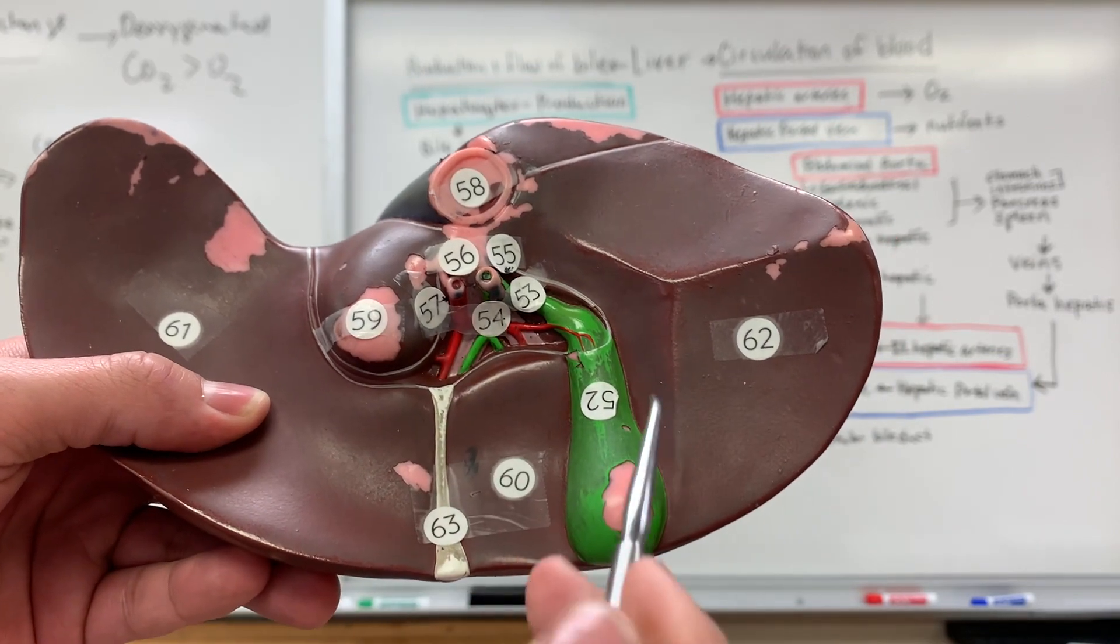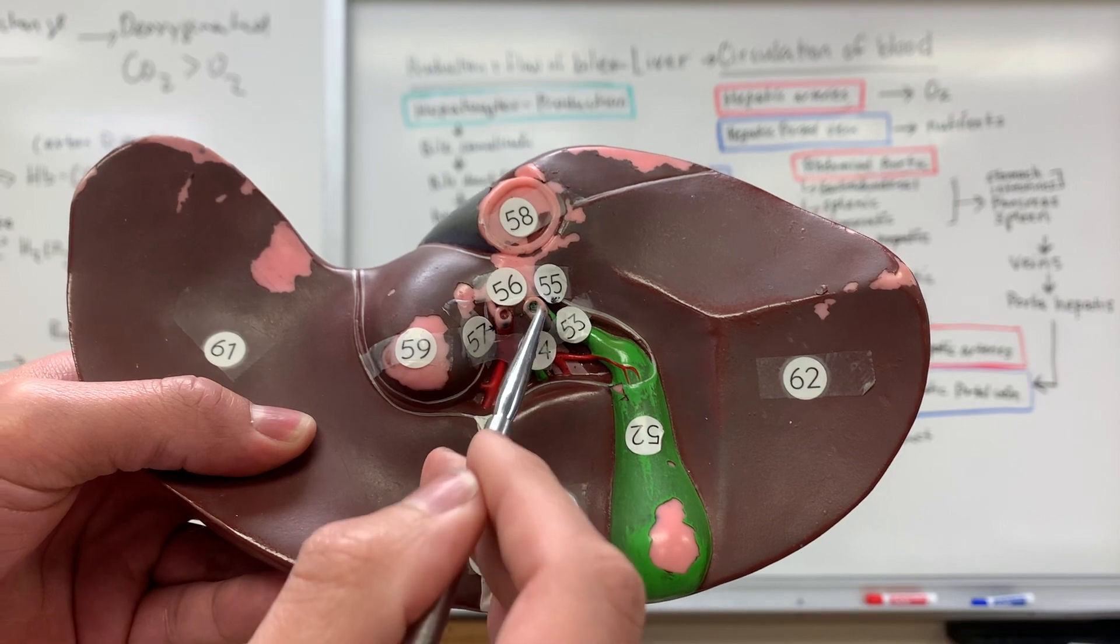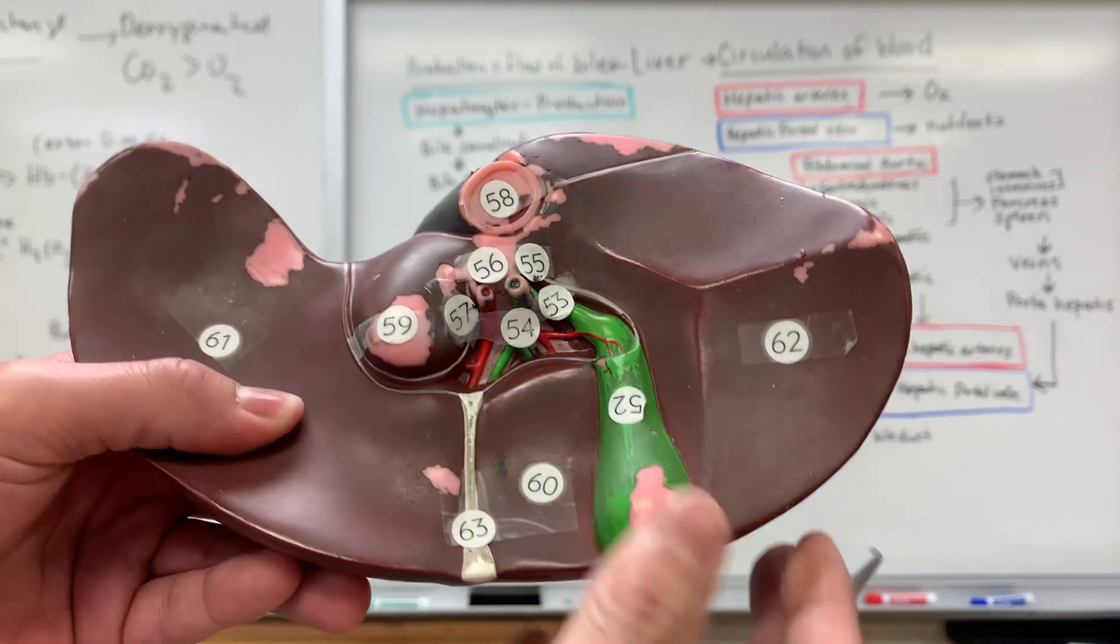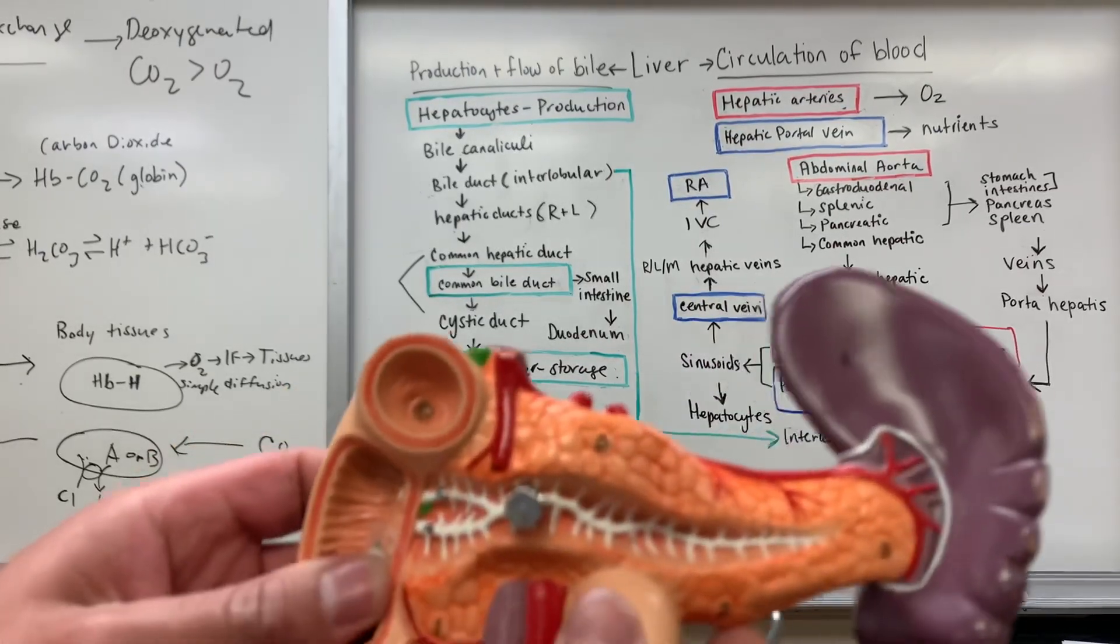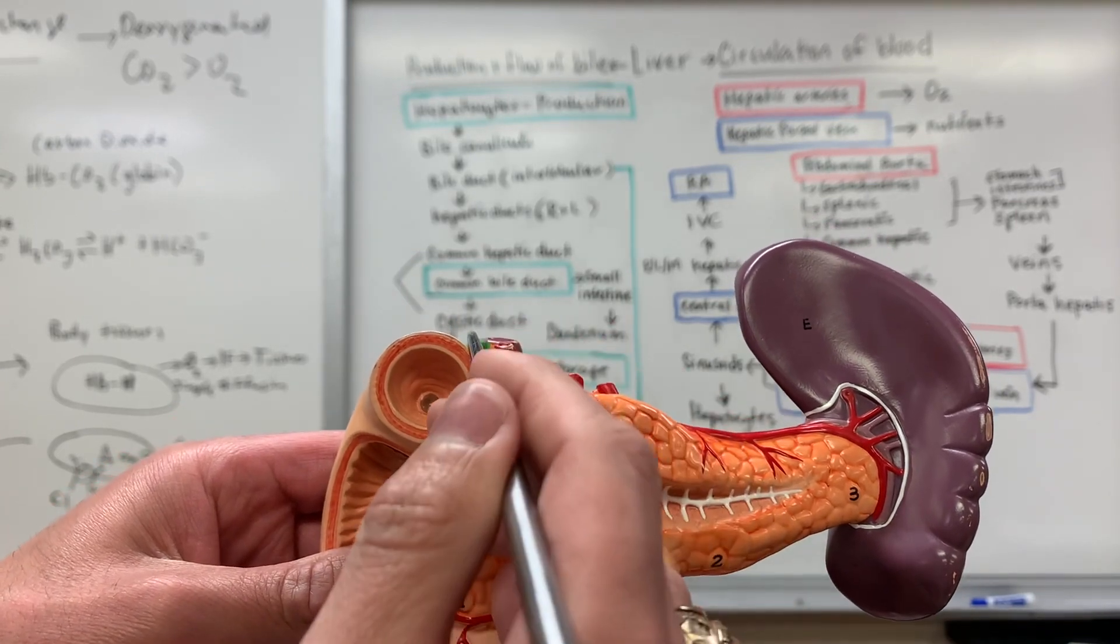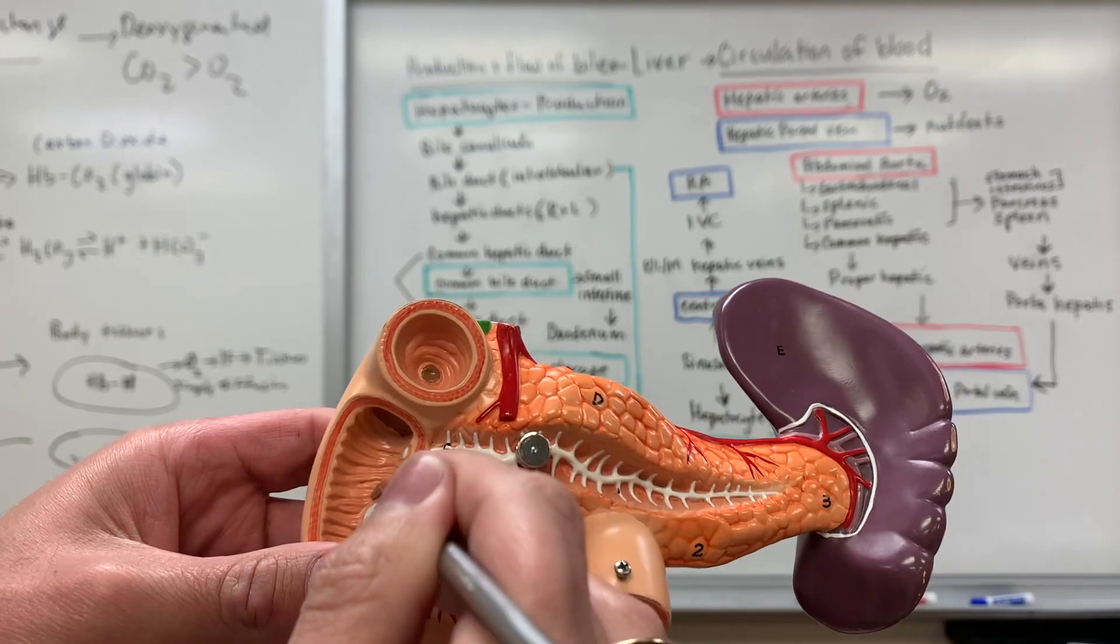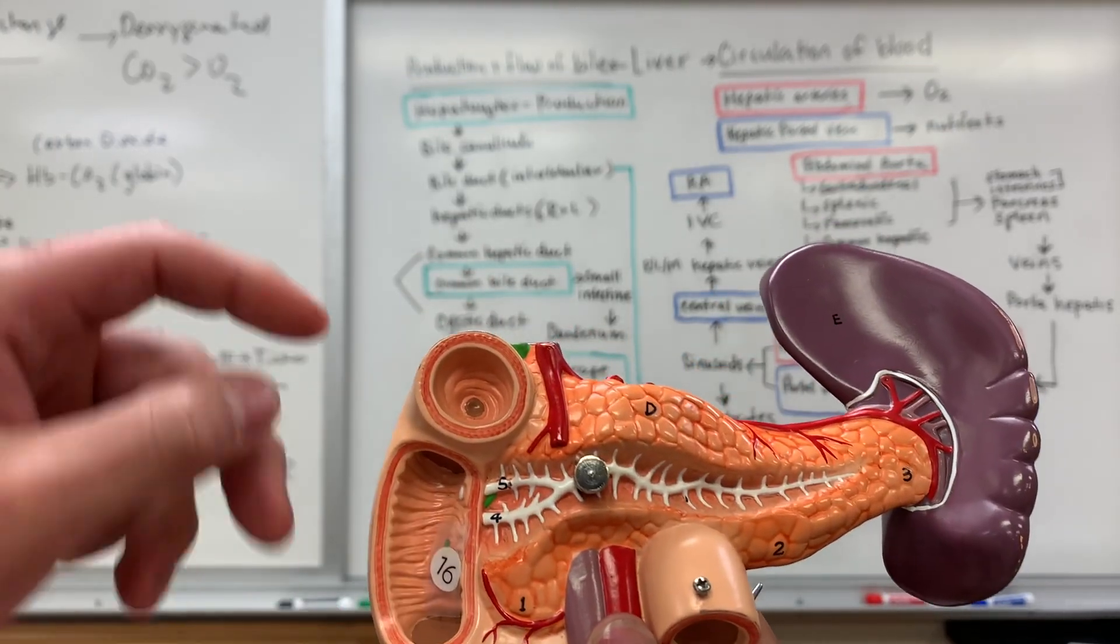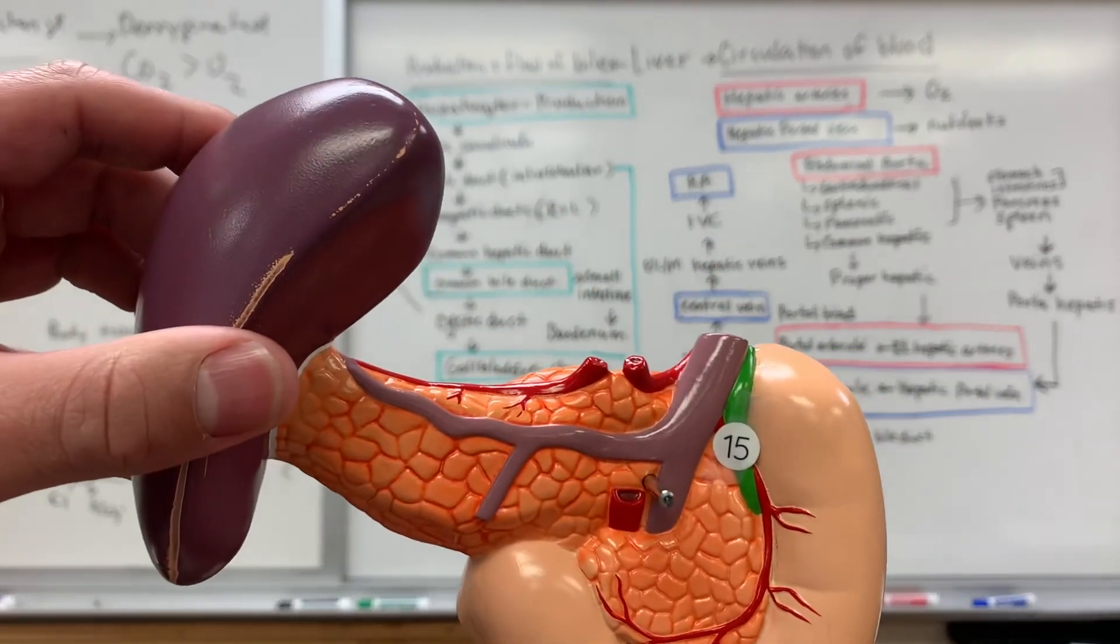So this here is the gallbladder. So you have the gallbladder, the cystic duct, and then once again, this is the common bile duct. So then this is also found in our other model. So this is the pancreas, and then you can see the common bile duct, which is traveling here to empty into the first part of the large intestine, which is where the duodenum is. So you can see the common bile duct there, and you can also see it here on the backside.